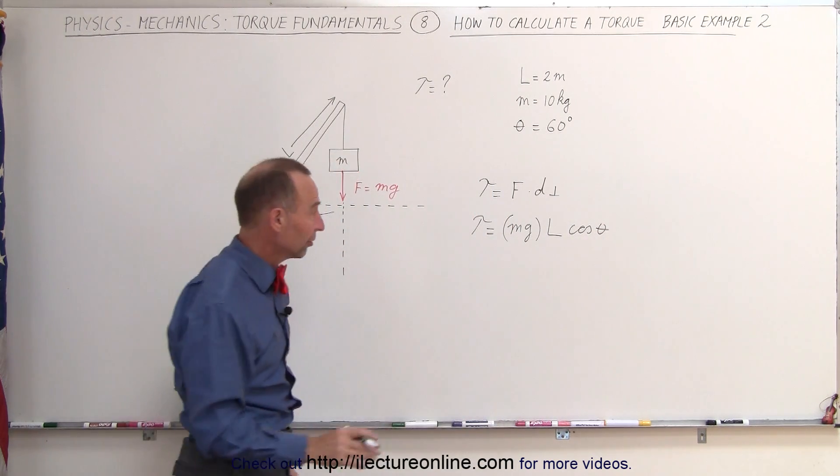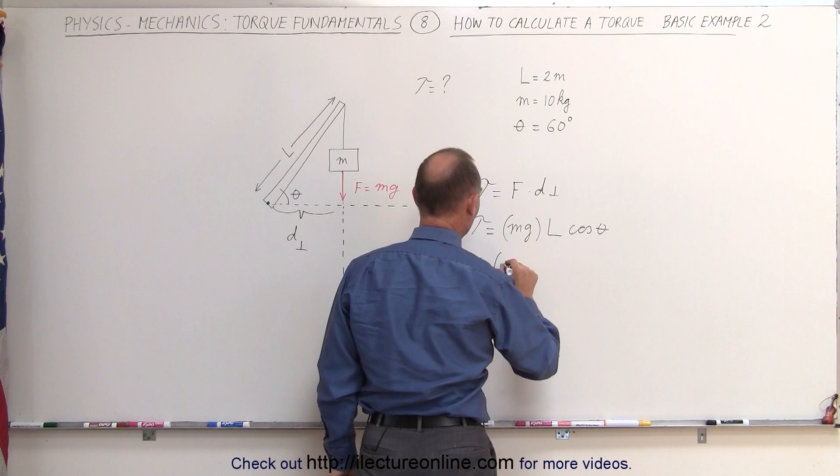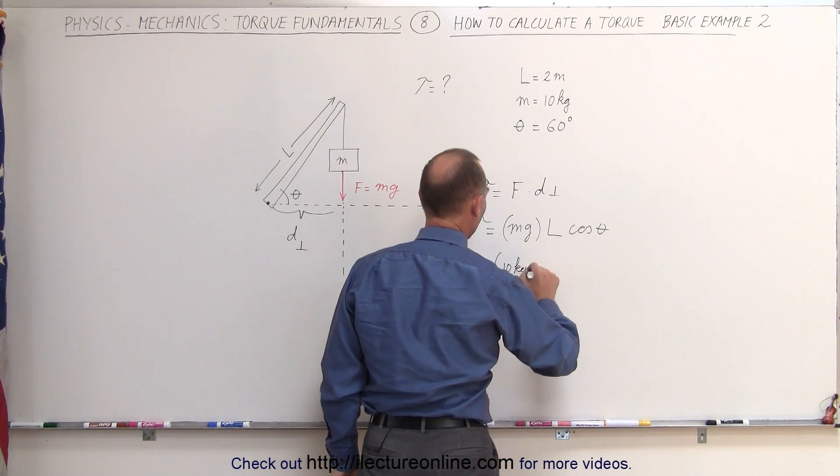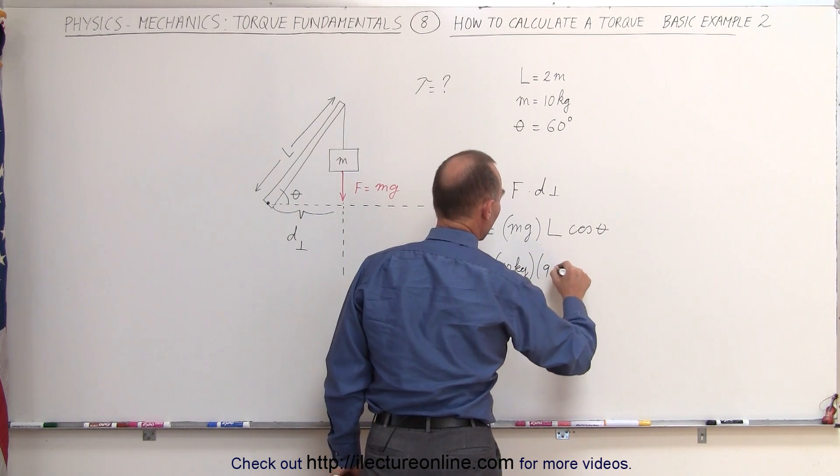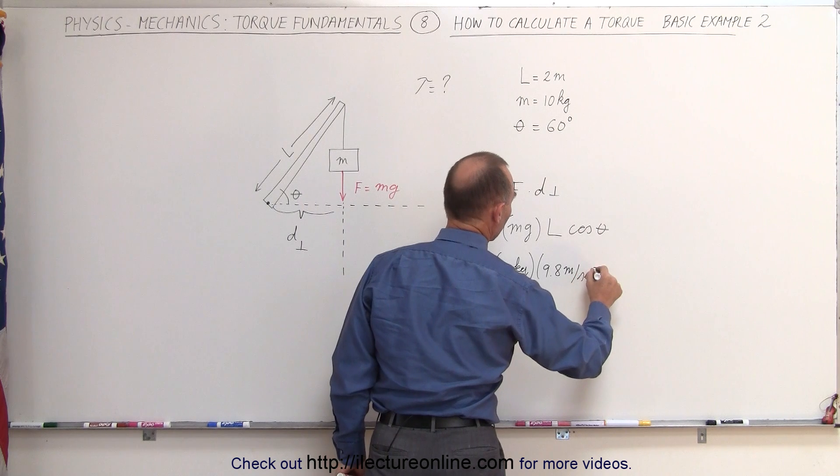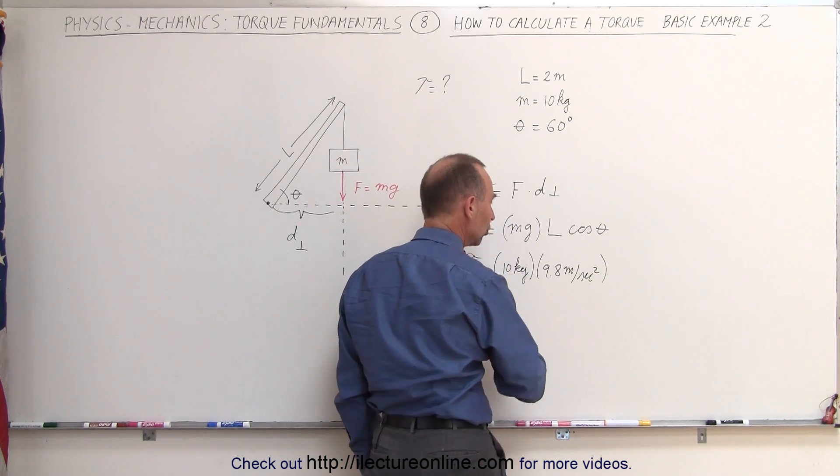Now plug in all the numbers that we know. The torque, therefore, is equal to the mass, which is 10 kilograms, g, which is 9.8 meters per second squared, kilograms times meters per second squared is newtons.